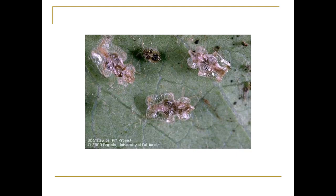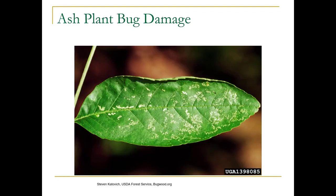Piercing-sucking insects include leafhoppers, lace bugs, plant bugs, aphids, psyllids, mealybugs, scales, whiteflies, adelgids, and more. Here's the rhododendron lace bug — they'll be on the underside of the leaf. The adults are actually very pretty insects. If you don't see the insects themselves, look for these black specks, which are fecal matter. Here's some stippling on an ash leaflet from a plant bug.